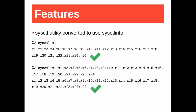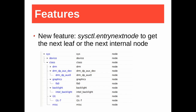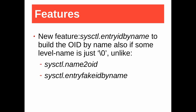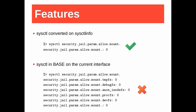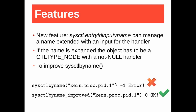Here the sysctl utility converted to use sysctl info — it can handle an object up to 24 levels. The new entry next node can get the next leaf or the next internal node. It is possible to show the symmetry of CTL nodes. I added a new feature to get the ID of a node even without a level name — it is entry ID by name. The sysctl utility converted to use this feature shows only the wanted object. Another new feature: this node can manage a name extended with input for the handler, and checks if the object is a CTL_TYPE node with a not-null handler; otherwise an error is returned. This feature improves sysctlbyname, and the example shows an object in the FreeBSD MIB.